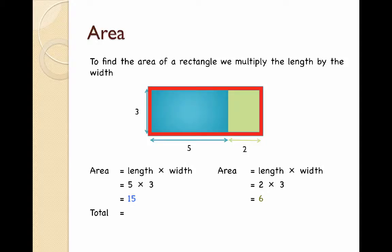If I wanted to know the total area of both the blue and the green rectangle I would just add my two answers together. I'd add 15 and 6 together and I'd get a total area of 21.